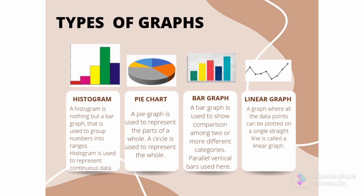Histogram is used to represent continuous data, hence there is no space between the vertical bars in histogram. Pie chart or pie graph: a pie chart is used to represent the parts of a whole. A circle is used to represent the whole and the segments of the circle are used to represent the parts of a whole.